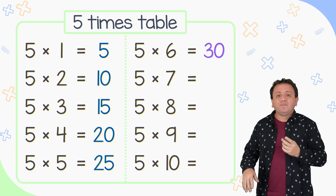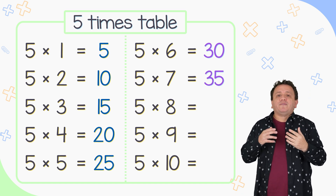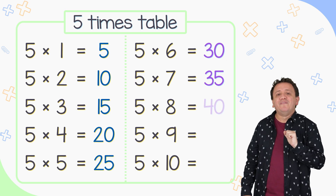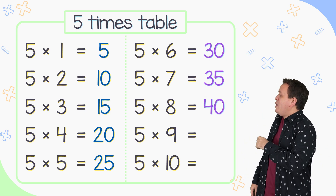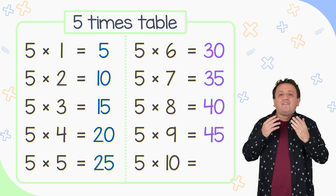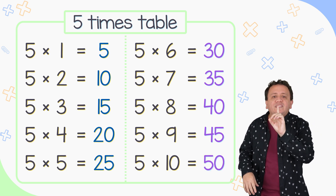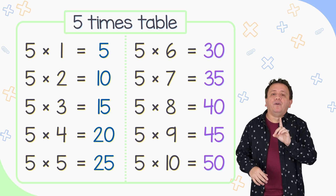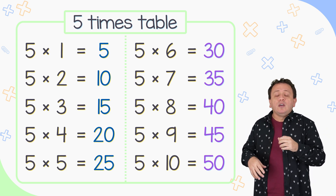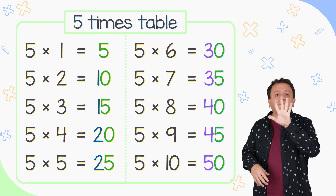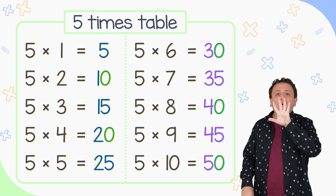5 times 7 is equal to 35. 5 times 8 equals 40. 5 times 9 is equal to 45 and 5 times 10 equals 50. I'm going to tell you something very important: all the products in the 5 times table end with 0 or 5. There is no other choice — 0 or 5.